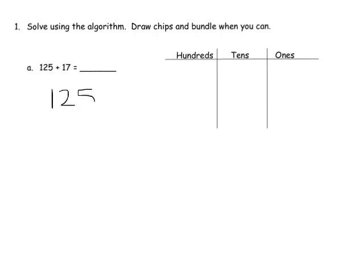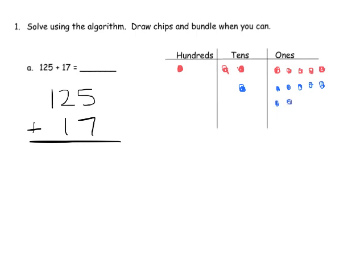We've got 125 plus 17, and we're going to model that. 125 is one in the hundreds, two in the tens, and five in the ones place. Then 17 is one in the tens and seven in the ones place. Now we're ready to add. We can look at the ones place and we know that we're going to have 12 in the ones place.